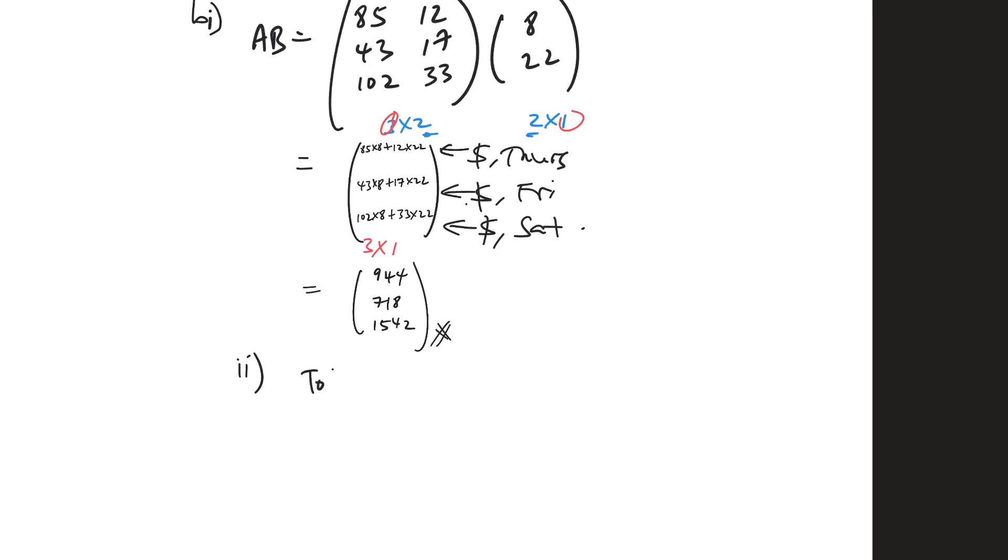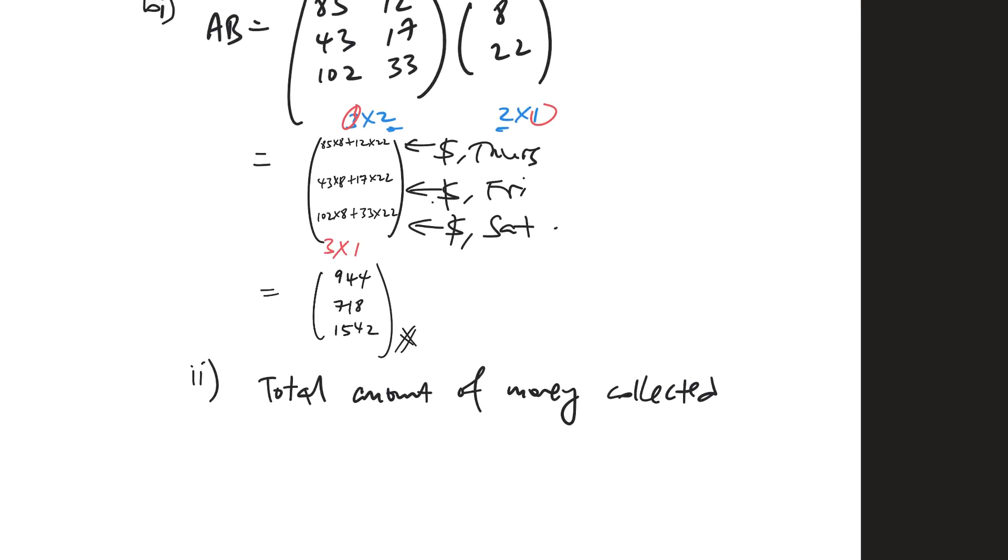So we can say the elements, what they mean is they are the total amount of money collected on each of the days, Thursday, Friday, and Saturday respectively. So it's really the same format and on each of the days, Thursday, Friday, Saturday, respectively. So it just tells me each one takes Thursday takes one and Friday takes one and Saturday takes the last one.